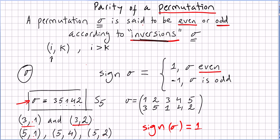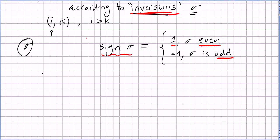In the previous video we saw the parity of permutations. First we introduced the concept of permutations, then in the second video we introduced the concept of parity of a permutation. A permutation is called even or odd according to its inversions. If the number of inversions is even, the sign of the permutation is one; if the number of inversions is odd, then the sign of the permutation is minus one.